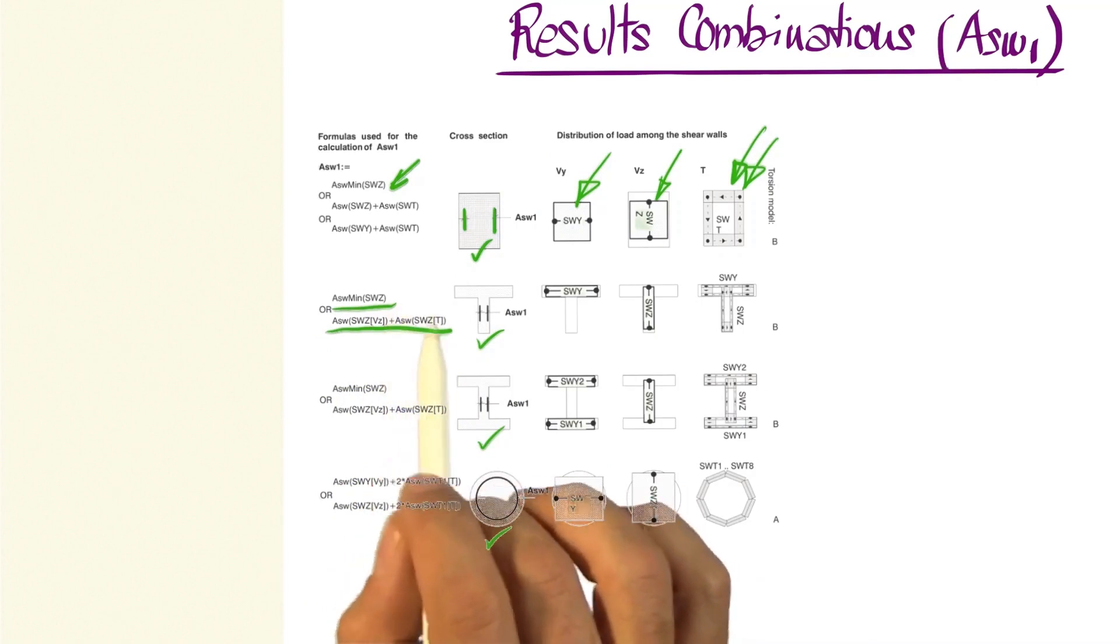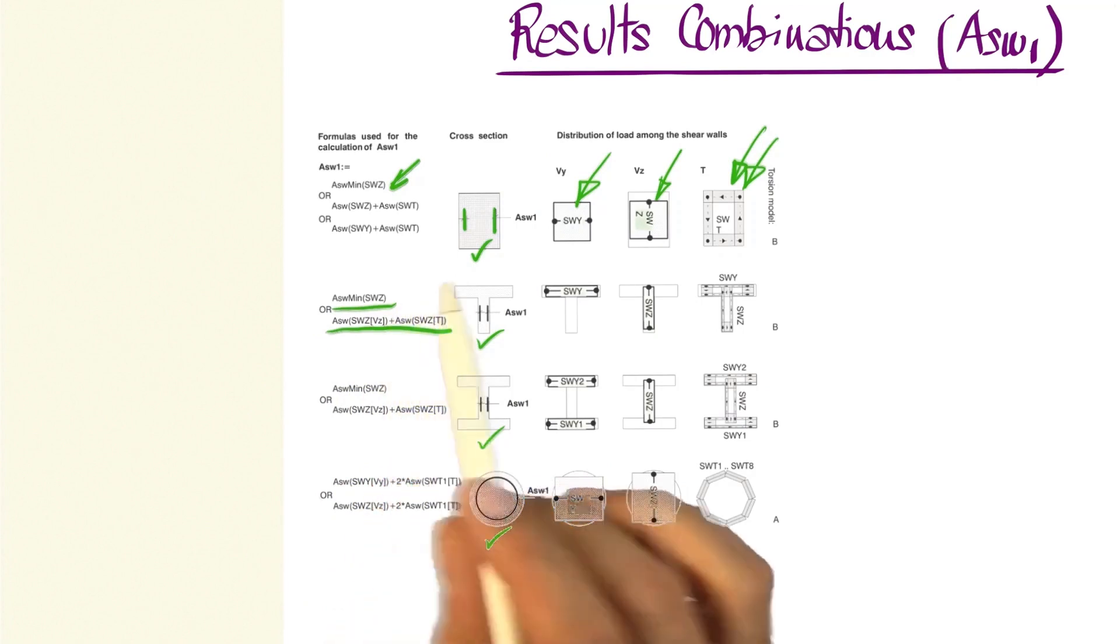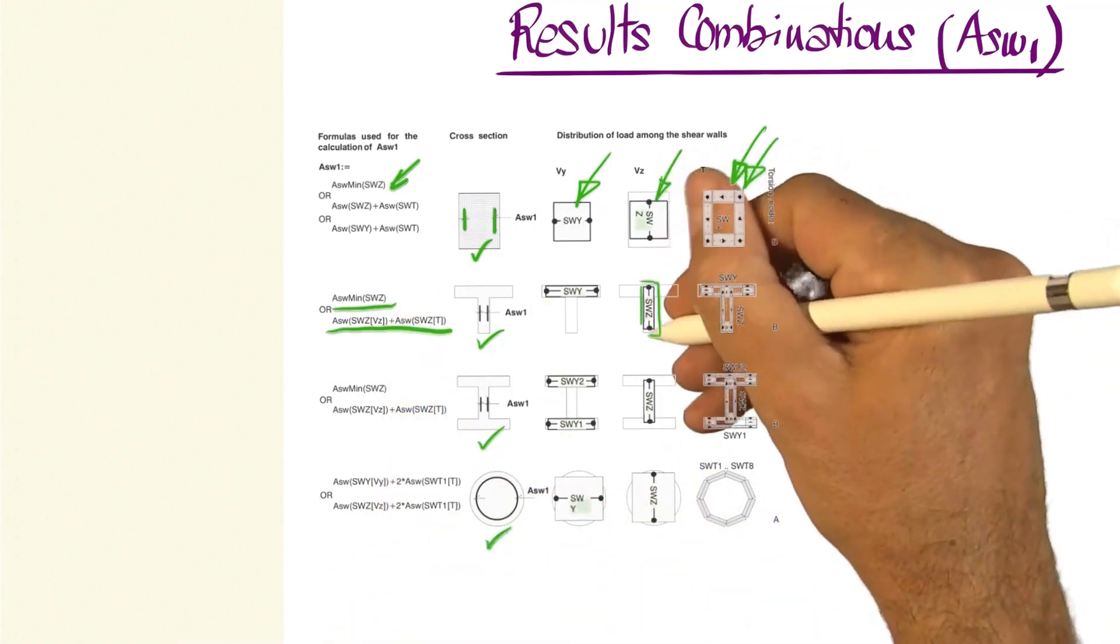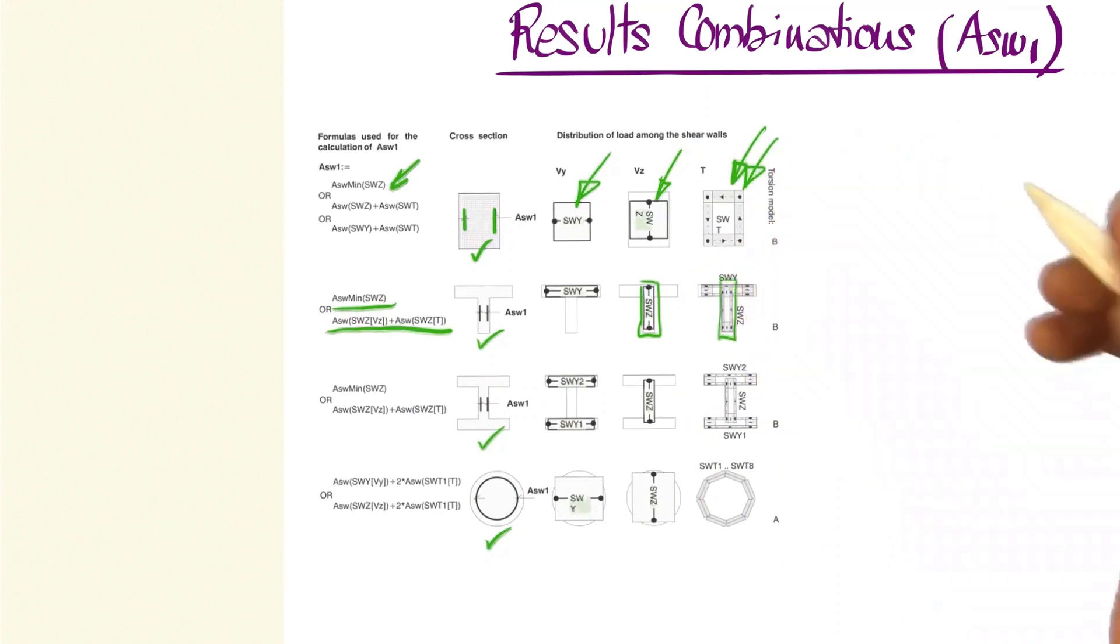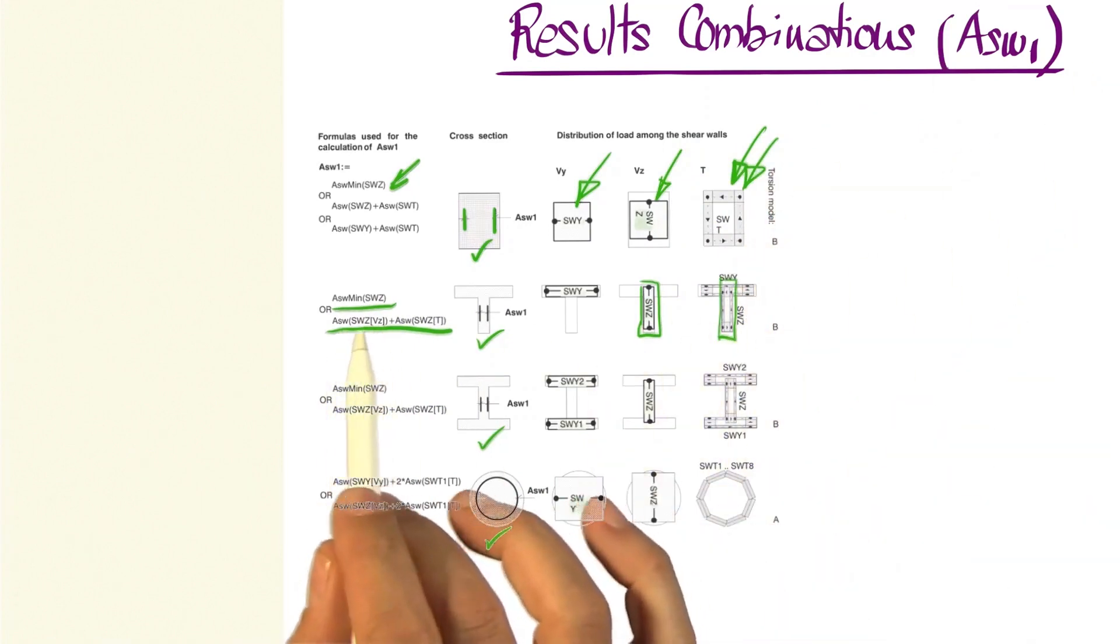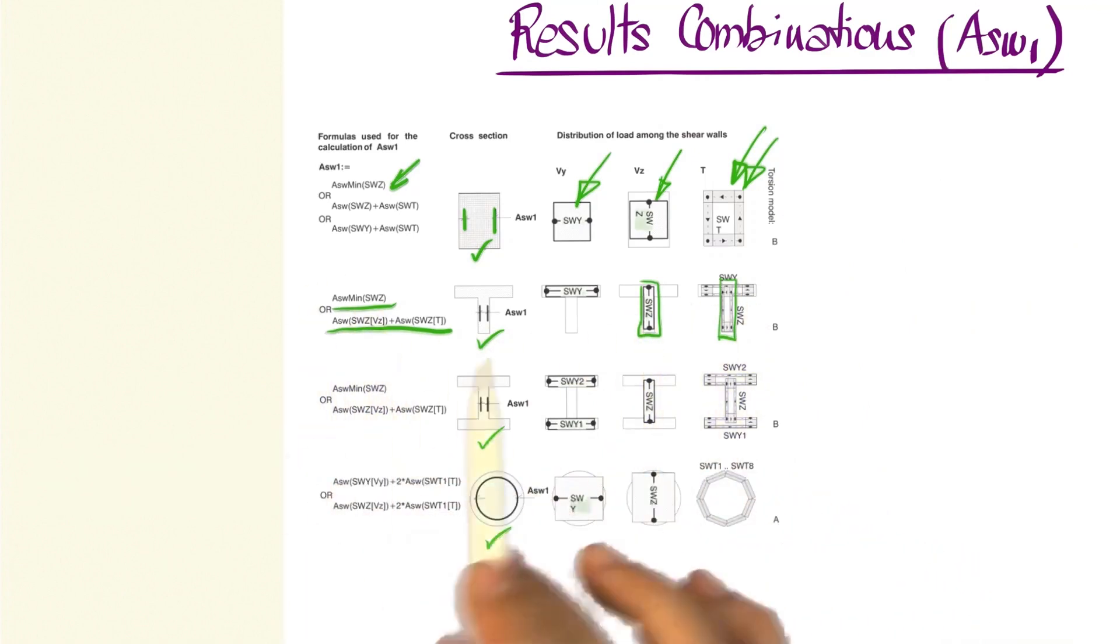and that our shear wall Z resists with regards to torsion, which is what we find here, plus that which is required to resist torsion. Logically, it will need the amount for both of them, or the minimum. We will see that there is a way to introduce this formula.